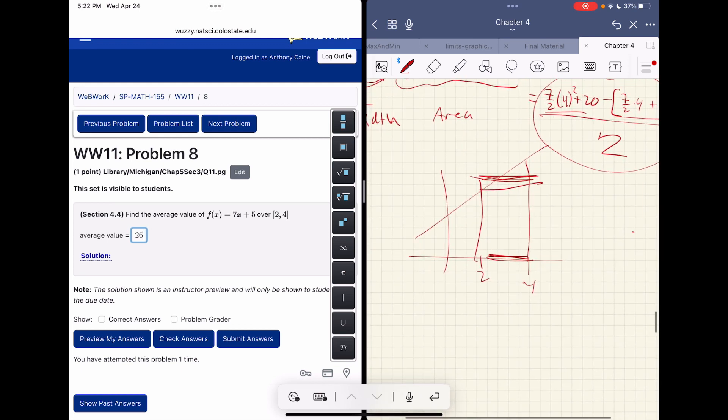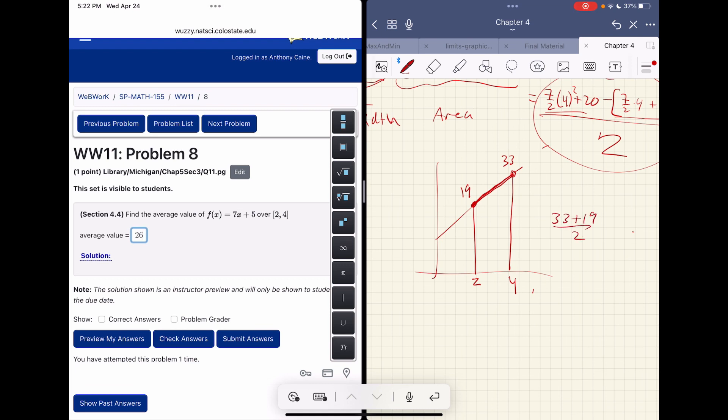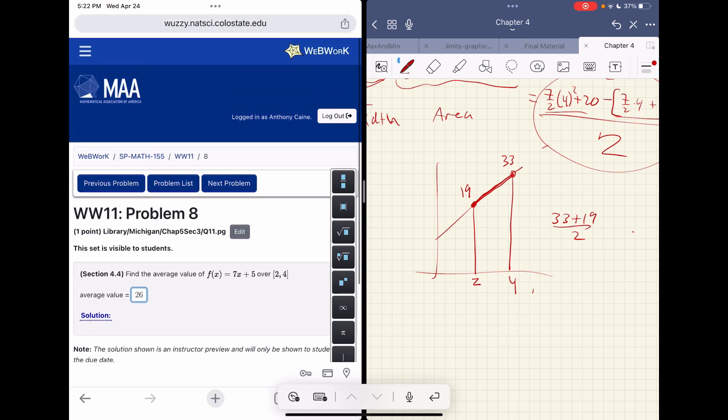Intuitively, this function looks like that. And at the low spot, at 2, if I plug in 2, 7 times 2 is 14, plus 5 is 19. And if I plug in 4, 28 and 5 is 33. And we sort of just increase in a very nice way. It's not curved or anything, which means we spend the same amount of time going each speed, for example, or the same amount of time at the same height kind of thing. And in fact, this turns out to just be the average.